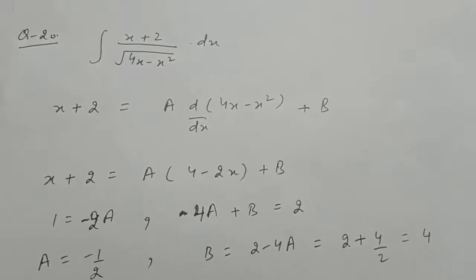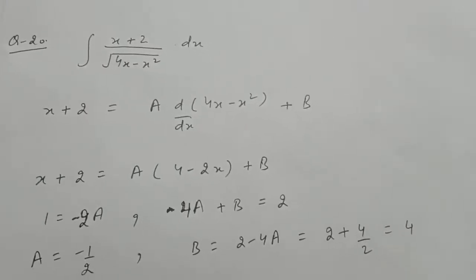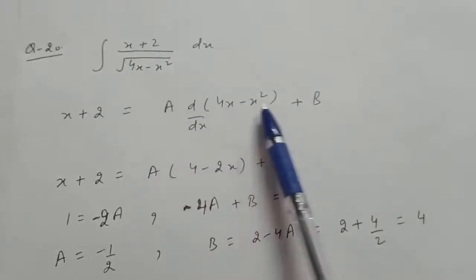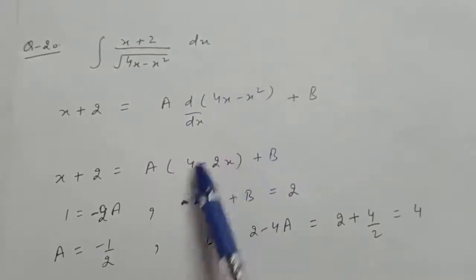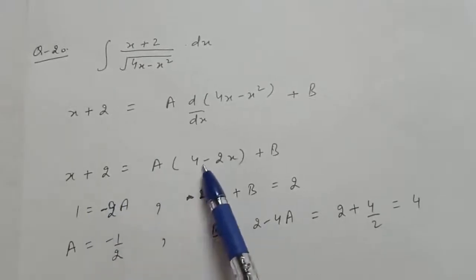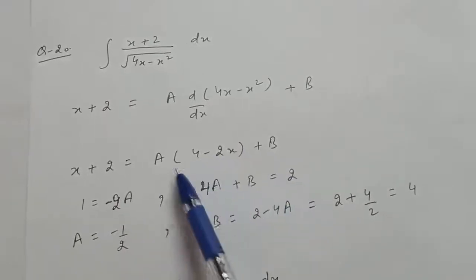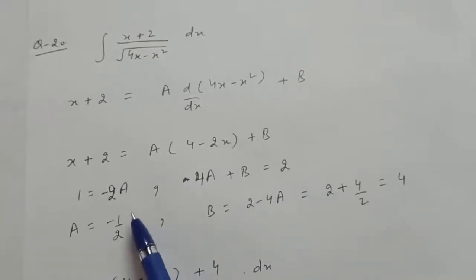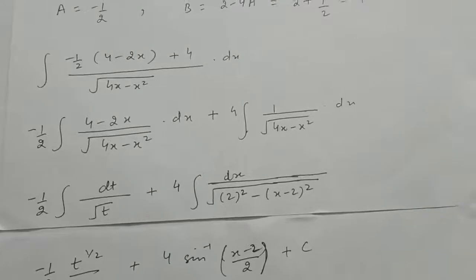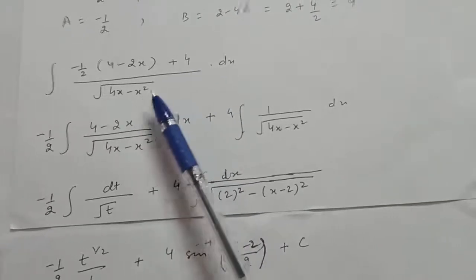Question 20th is the integral of (x + 2)/√(4x minus x²) dx. Write x + 2 as A times the derivative of (4x minus x²) plus B. The derivative is 4 minus 2x. Comparing coefficients: coefficient of x gives A equals minus 1/2, and the constant term gives 2 equals 4A + B, so B equals 4.